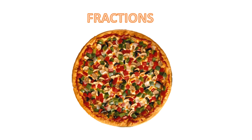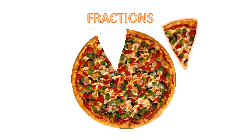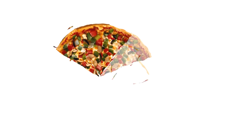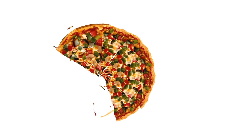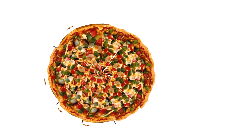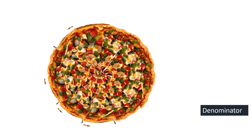Now let's understand fractions with one more example — a delicious pizza. To make it a fraction, we cut out some slices. So how many slices are there? One, two, three, four, five, six, seven, eight, nine, ten, eleven. Eleven slices in total make one full pizza. So the total number of slices is eleven, and we write eleven in the denominator.